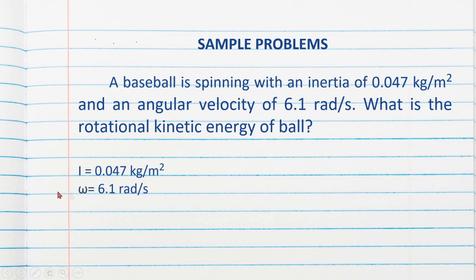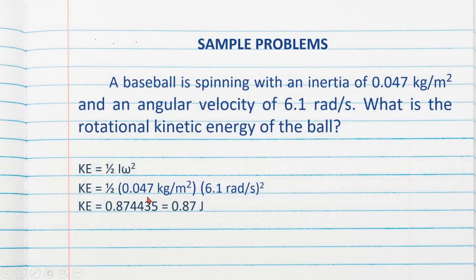Our given would be the inertia, I, which is 0.047 kilogram meter squared, and the angular velocity, omega, which is 6.1 radians per second. Then we just substitute it according to its formula. Square your omega, then multiply it by the inertia and one half. We would then have 0.87 joules.